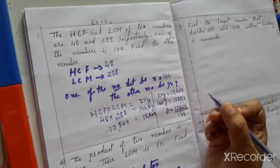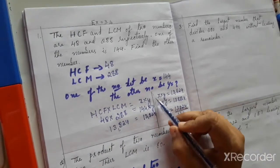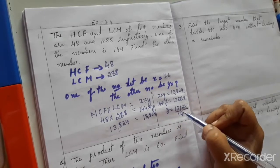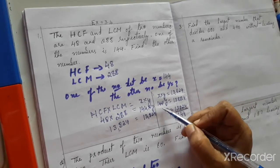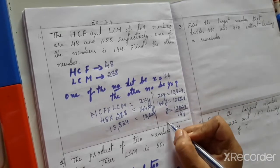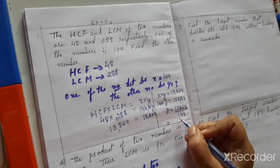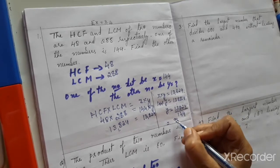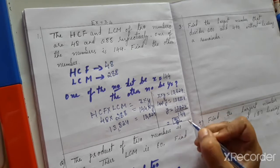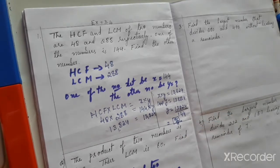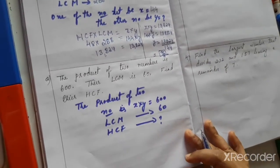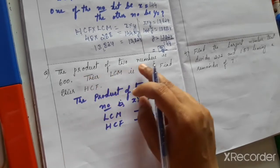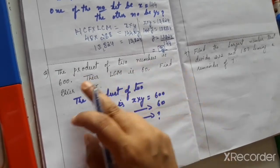So x × y = 13824, and y = 13824 ÷ 144. After dividing, you get 96. So the answer is 96. Next, the second question: the product of two numbers is 600.